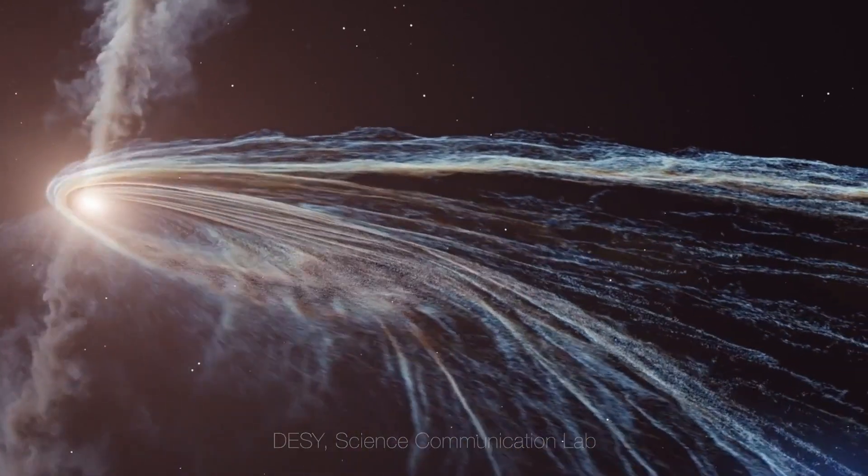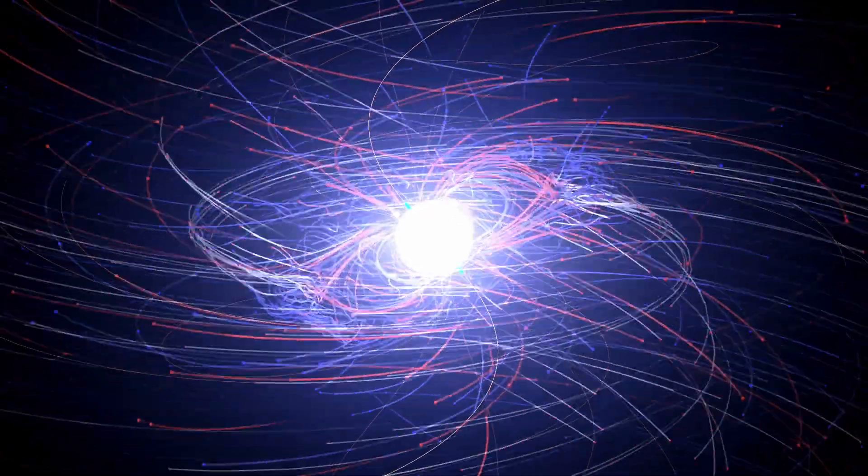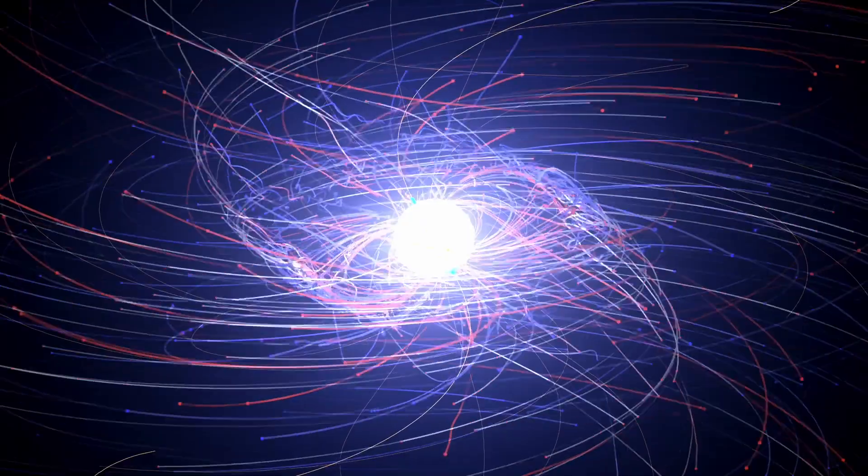Will it become a neutron star or a black hole? The answer lies in how much material remains after the supernova. If the remains are less than 2 to 3 solar masses in the central region, Betelgeuse will become a neutron star.